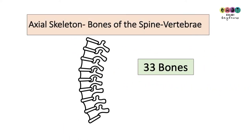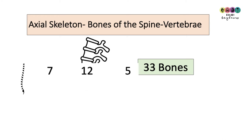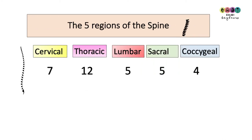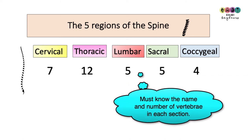Another part of the axial skeleton are the bones of the spine — the vertebrae. You have 33 vertebrae in the vertebral column, sometimes referred to as the spine, and it's divided into five regions. You have to know the name of each of those five regions and the number of vertebrae in each.